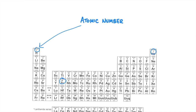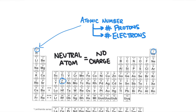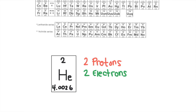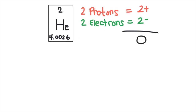In a neutral atom — that is, an atom that does not have an overall positive or negative charge — the number of protons will be equal to the number of electrons. So the atomic number can tell us the number of protons, and it can also tell us the number of electrons. Remember that protons are positive and electrons are negative. Since helium has two protons and two electrons, the two positive charges and two negative charges cancel each other out, making the atom neutral. An atom cannot gain or lose protons, because it would become a completely different kind of atom.